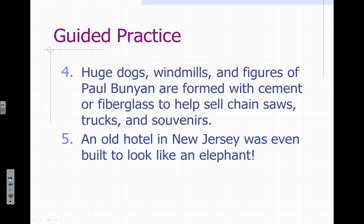Here are two more for you to practice with — same procedure. Pause when you need to, and when you're ready to check your answers, hit play. Sentence four: Huge dogs, windmills, and figures of Paul Bunyan are formed with cement or fiberglass to help sell chainsaws, trucks, and souvenirs. Number five: An old hotel in New Jersey was even built to look like an elephant. Go ahead and pause here before seeing the answers.